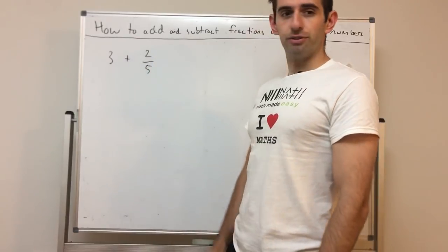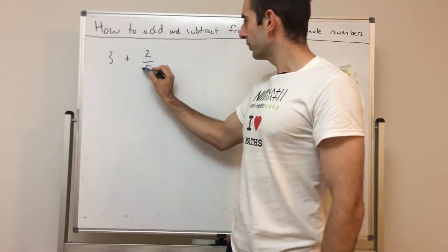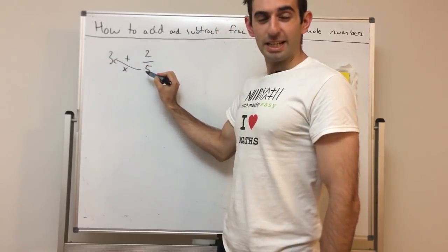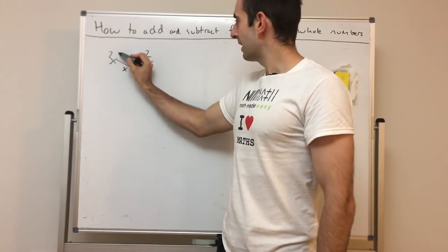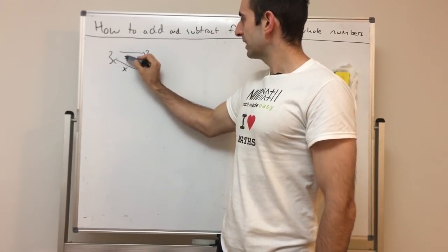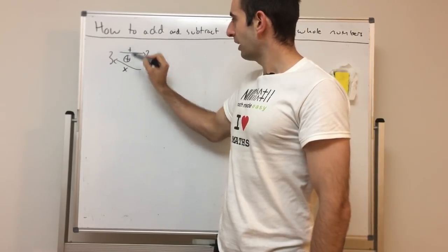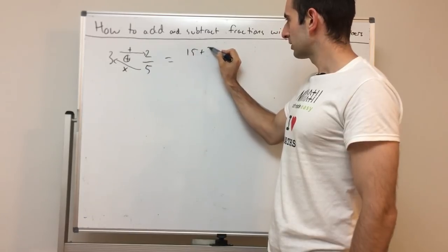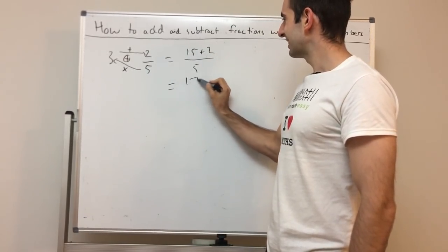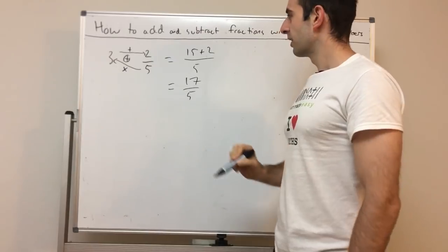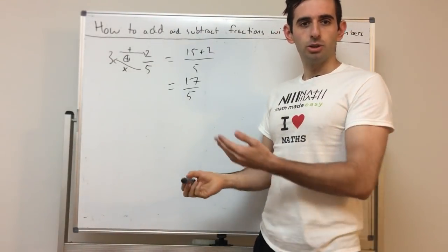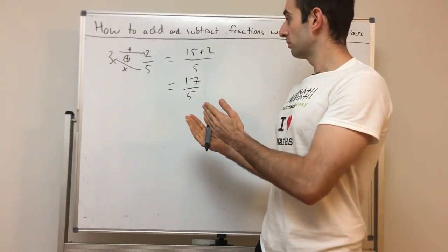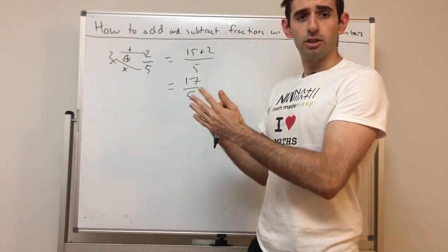If I want to add 3 with 2 fifths, all I do is times 3 with the denominator, and then whatever this symbol is here, I'll add it to 2. So straight away that would be 15 plus 2 over 5, which is 17 over 5, the exact same process for converting mixed numerals to improper fractions.